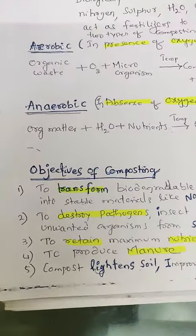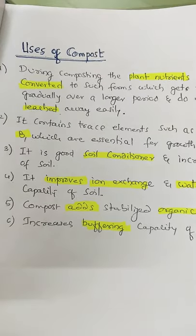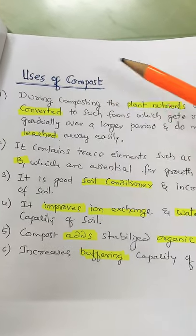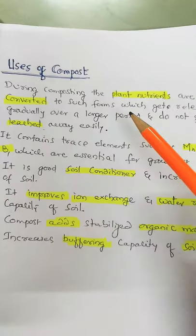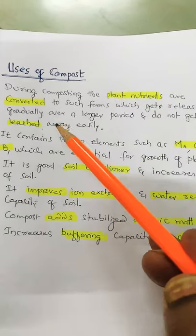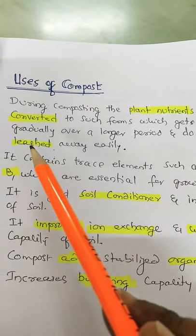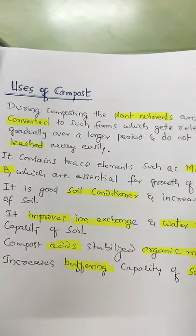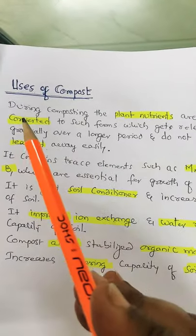The uses of compost: during composting, the plant nutrients are converted to such forms which get released gradually, so nutrients are released naturally with no leaching or acidic matter produced — natural transformation of nutrients which can be absorbed easily by the plants. Second use: it contains trace elements such as manganese, copper, barium which are essential for growth of plants.